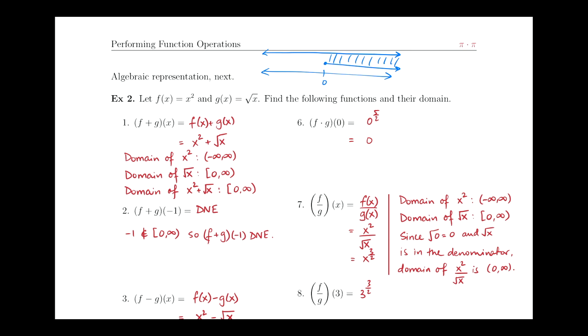Now, had this said f plus g of 3, or say 4, f plus g of 4, then we would have had 4 squared plus square root of 4, which would have given us 16 plus 2, which is 18. So if we pick a number that's in the domain of the sum of the two functions, we can plug it in, no problems. If we pick a number outside, it's not going to give us a defined answer.